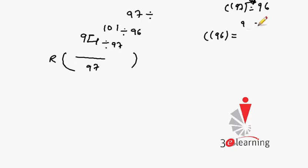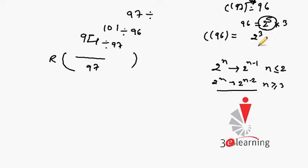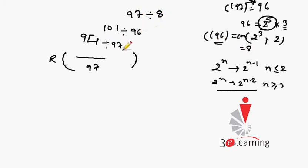To check the cyclicity of 96, we factorize it: 96 = 2 raised to power 5 × 3. For 2^5, we use the special case for 2^n: cyclicity of 2^n is 2^(n-1) when n ≤ 2, and 2^(n-2) when n ≥ 3. So cyclicity of 2^5 is 2^3 = 8, and cyclicity of 3 is 2. The LCM of 8 and 2 is 8, so the cyclicity of 96 is 8.